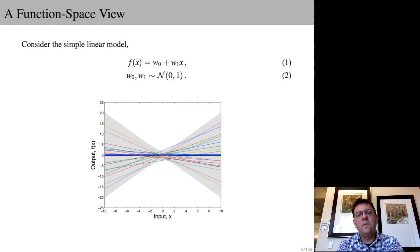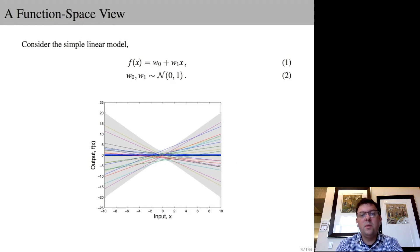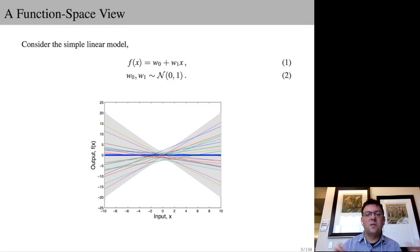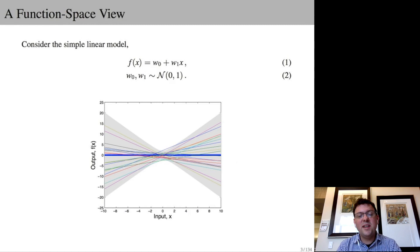To begin understanding the motivation for choice three, it's helpful to think about modeling from a function space perspective. Let's consider choice one, the linear function, f(x) = w0 + w1x. We'll put a standard normal distribution over w0 and w1. This will induce a distribution over functions, which we can visualize by sampling from this distribution over the parameters and looking at the different straight lines with different slopes and intercepts that we get. The gray shade shows a 95% credible set, and the solid blue curve shows the expectation of this distribution over functions.